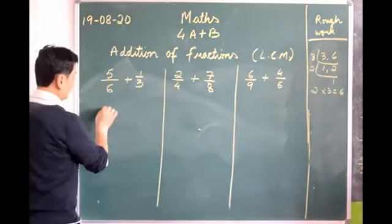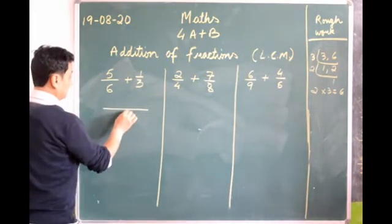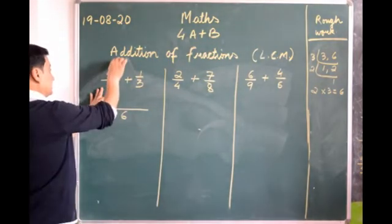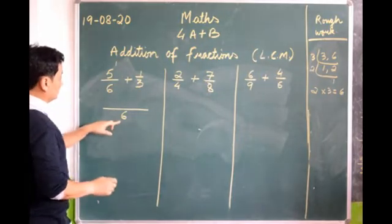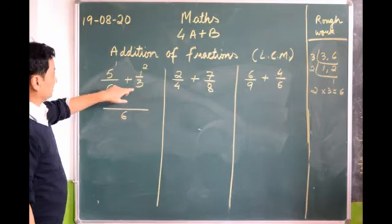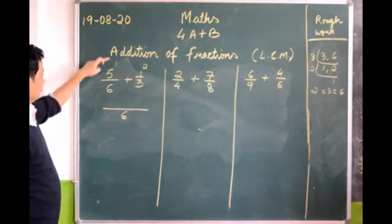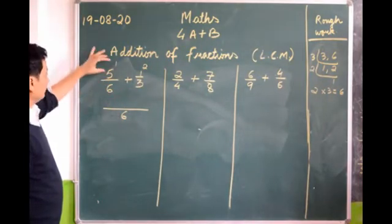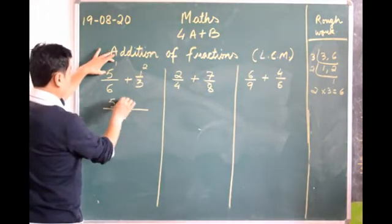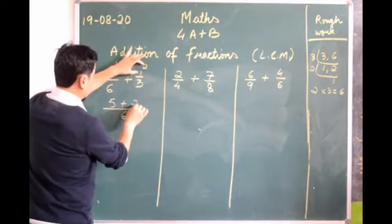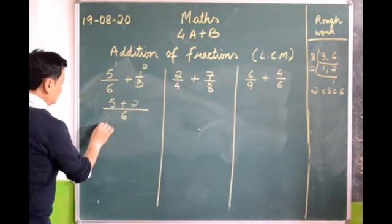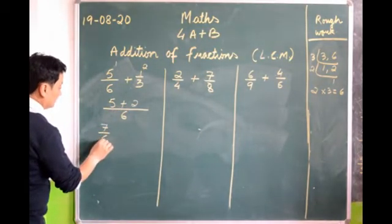Now we multiply: 5 times 1 is 5, plus 2 times 1 is 2. Now we can add: 5 plus 2 is 7, so we get 7/6. This is an improper fraction so we need to divide. 6 goes into 7 one time; 6 ones are 6, and the remainder is 1. So the answer is 1 and 1/6.